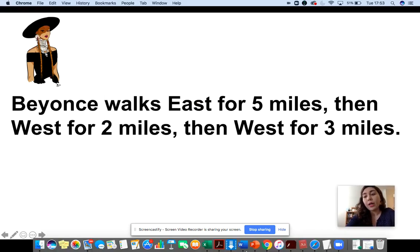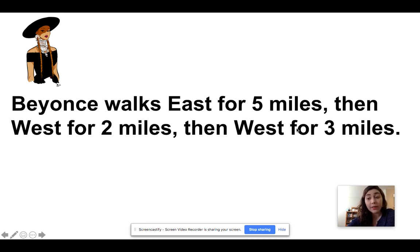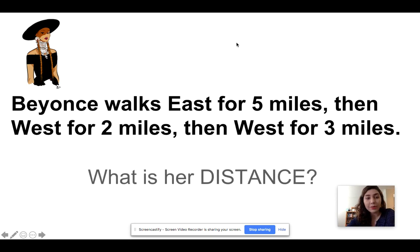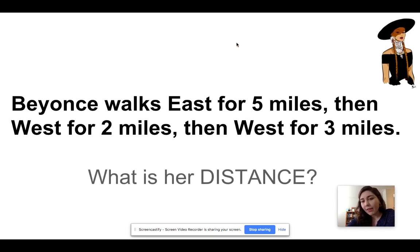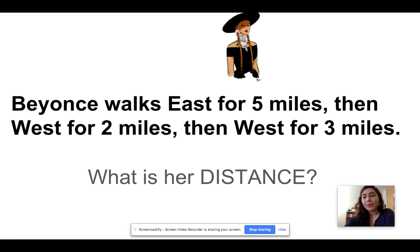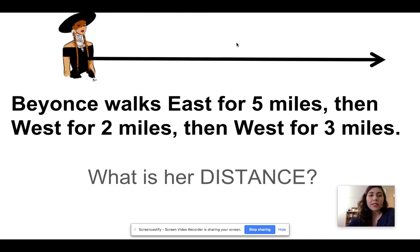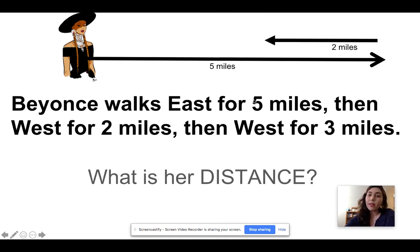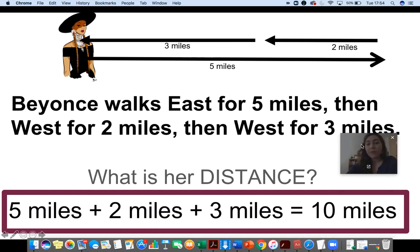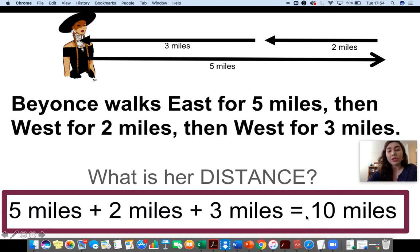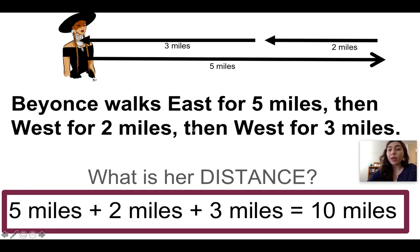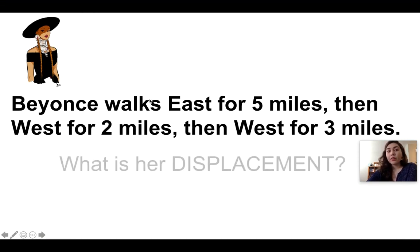In the next example — similar to a couple on your assignment — Beyoncé walks east for five miles, then she walks west for two miles, and then west again for three miles. Her distance is all the paths she traveled added together, so we have five plus two plus three.